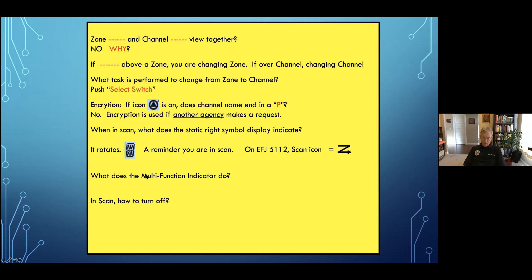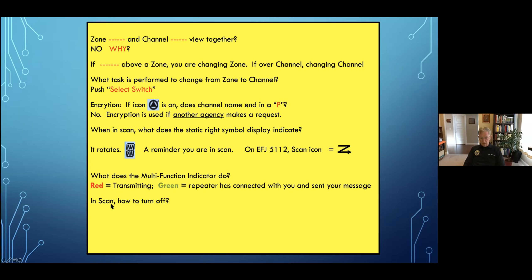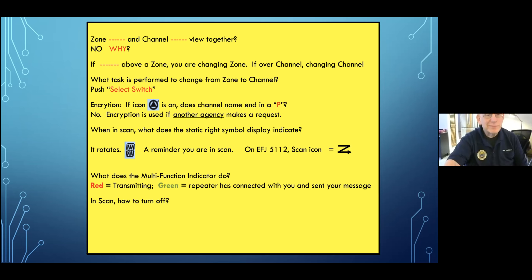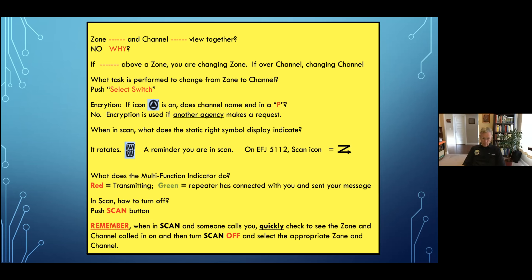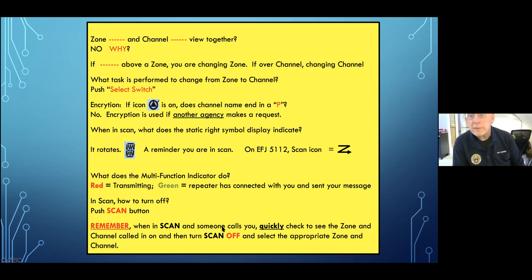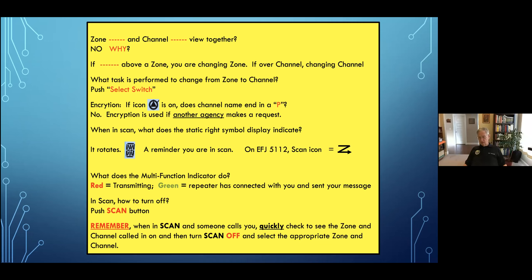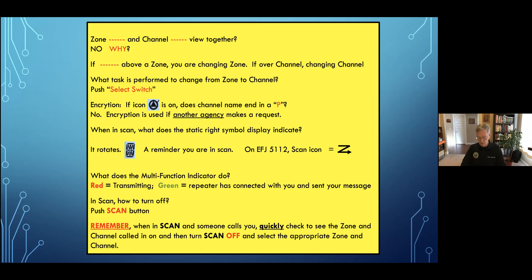The multi-function indicator — that little LED on top. If it's glowing red, you're transmitting. If it's green, the repeater is connected and you know you've been reasonably successful getting your message out and are waiting for someone to answer back. In scan, how do you turn it off? Just push the button again. When in scan and someone calls you, you only have about two or three seconds to look at the screen to see who it was. Just turn scan off and select the channel and zone that you need to talk to that person.